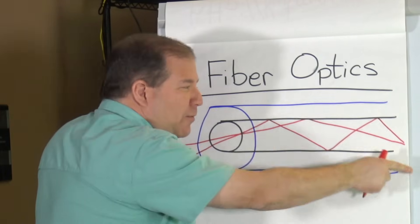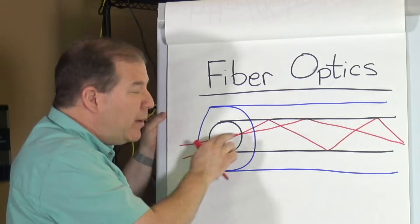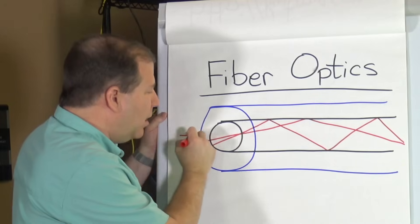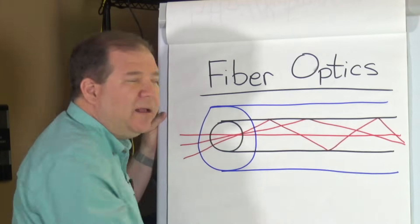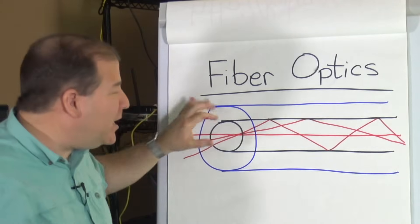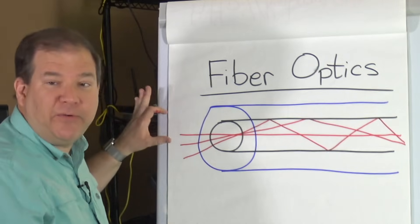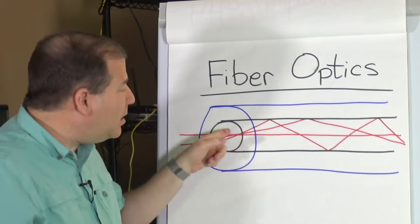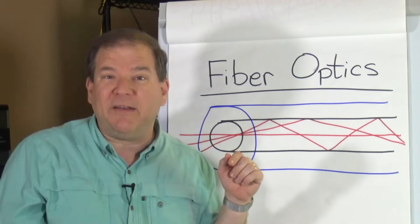This one's bouncing back and forth a whole lot, and this one's barely bouncing at all. We might have yet another mode of propagation where the light almost goes right down the middle. It's going to get there faster. Can you imagine that if we had different photons representing different binary bits, that it's possible that these bits could arrive out of order?